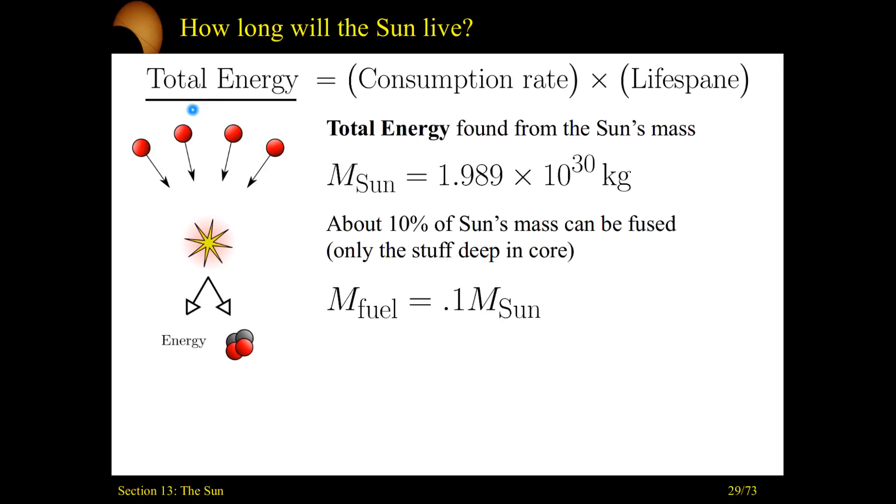Let's go with the total energy. How much energy is in the sun? Well, it comes from the sun's mass, right? It's the sun's mass that's being compressed to fuel the fusion processes. So the sun has a mass of 1.989 times 10 to the 30th kilograms.